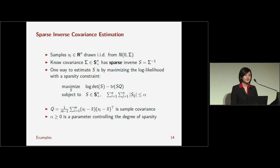So, one natural way to do this is to maximize log likelihood function. But we're going to add a new sparsity constraint, and the sparsity constraint is simply that the L1 norm of my matrix S is less than or equal to some parameter alpha. Alpha is something that's user-defined. And then, this is, if you simplify the log likelihood function, you get this problem, which is a convex problem. You're maximizing log determinant of S minus trace of S times Q. Q is your sample covariance, and your constraint is S must be positive semi-definite, and then the sparsity constraint.